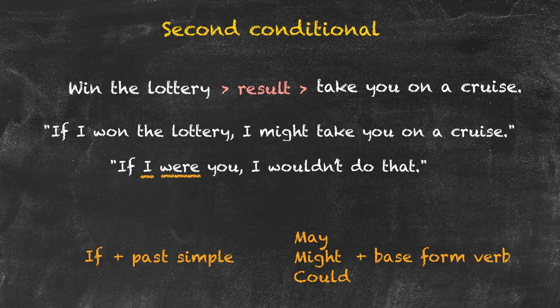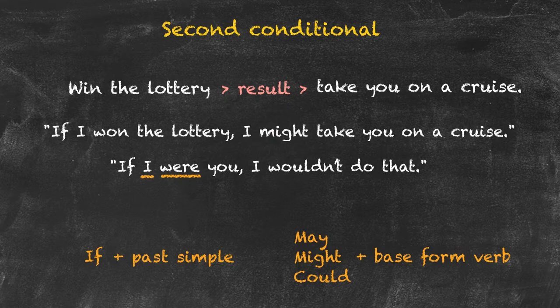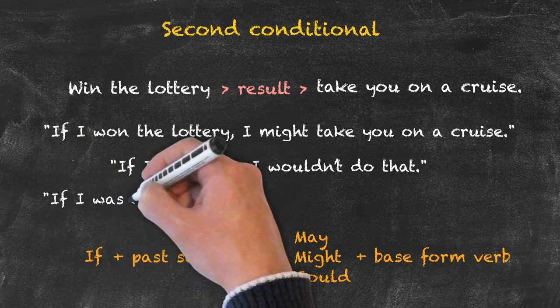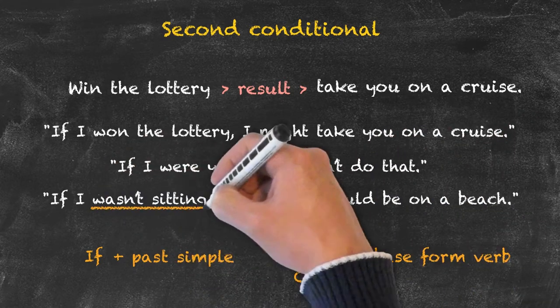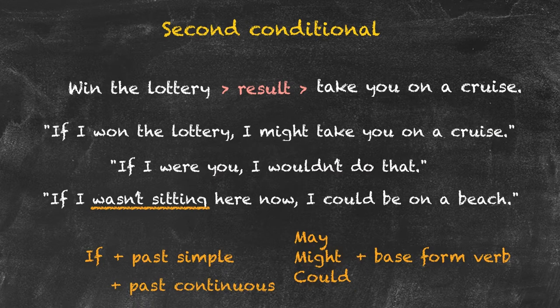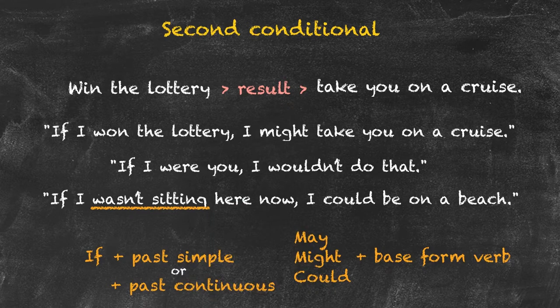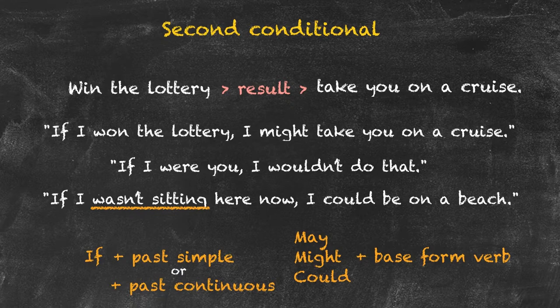Another teaching point: "If I wasn't sitting here now, I could be on a beach." Rather than past simple, here we're looking at past continuous. So the structure for the second conditional is: if plus past simple or past continuous, may, might, could, and the base form of a verb.